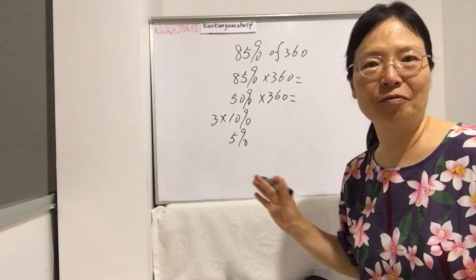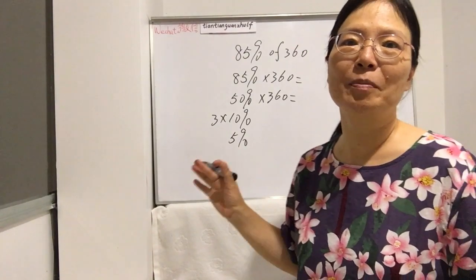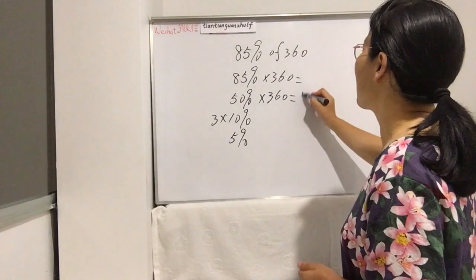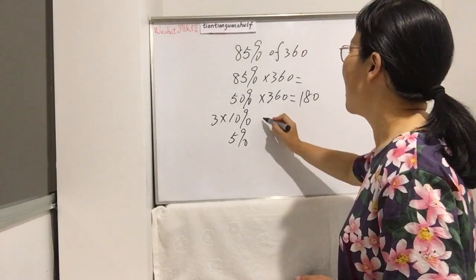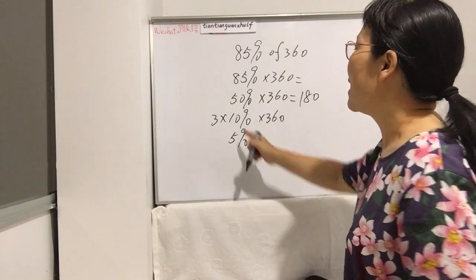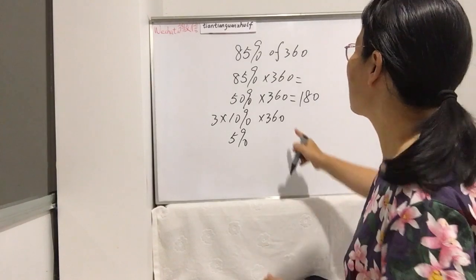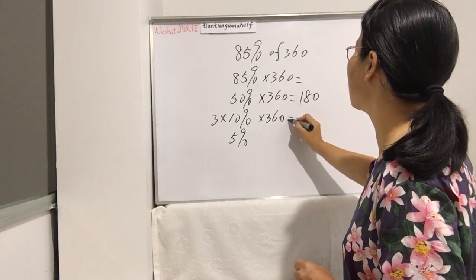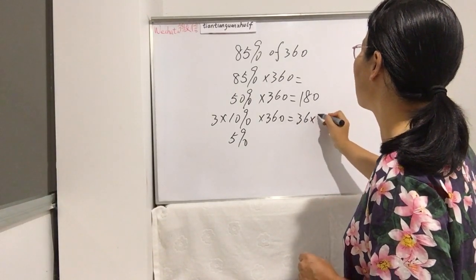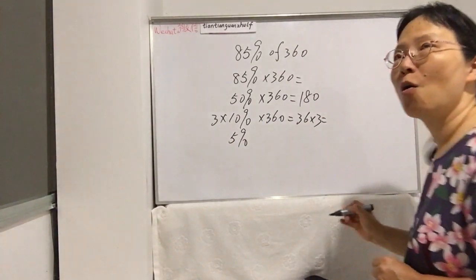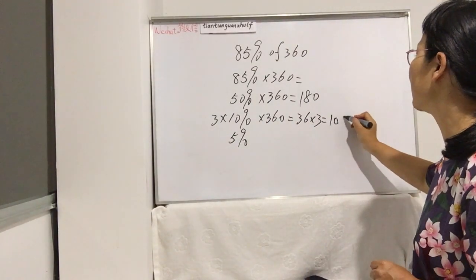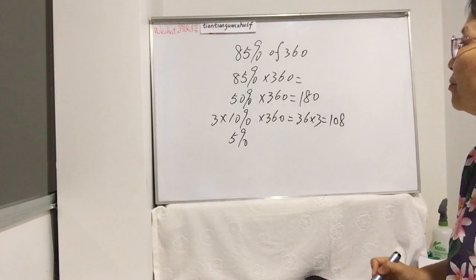So now let's work this answer. 50% of 360 is half, so any number times 50% is half. Like 100 times 50% is 50. So this is 180. And here's a little trick: any 10% we just move one stop from the left, so it's 36 times three, so 108.